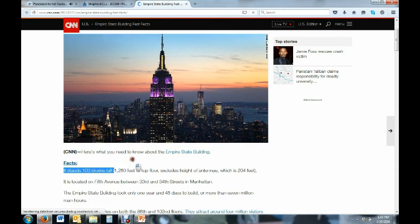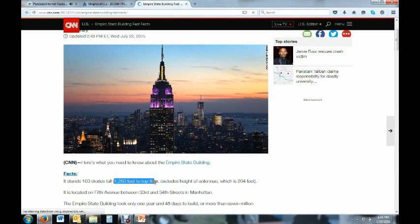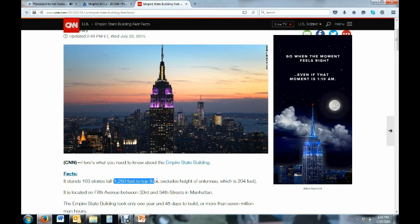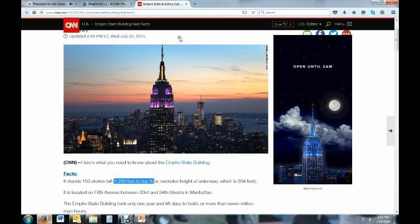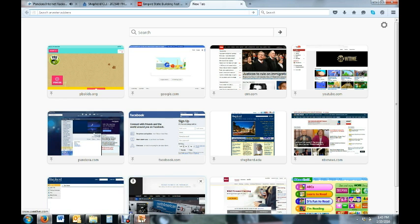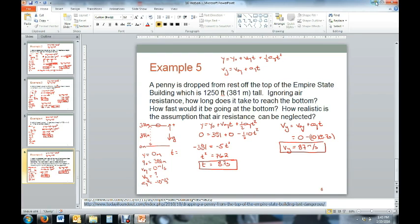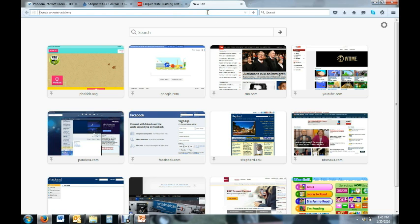It's 1,250 feet to the top floor. But if you want to include the antenna on top, you have to add an additional 204 feet. However, I highly doubt somebody is going to be standing on the top of the antenna to drop a penny. So I chose the 1,250 feet and then converted that to meters. So for our second website, there's this statement, what would happen if you dropped a penny off the top of the building? Would it hurt somebody?